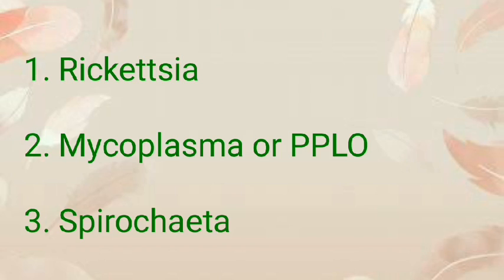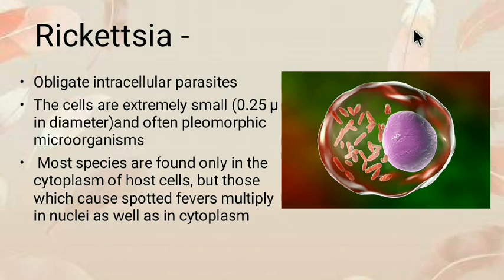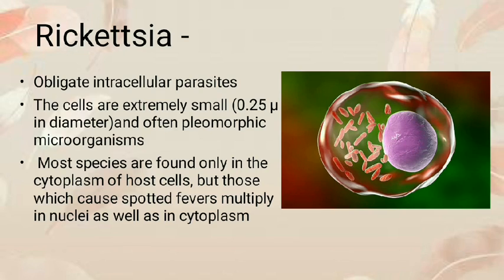Rickettsia are bacteria which are obligate intracellular parasites. They are considered a separate group of bacteria because they have the common feature of being spread by arthropod vectors like lice, fleas, mites, and ticks. The cells are extremely small, rod-shaped, coccoid, and often pleomorphic microorganisms which have typical bacterial cell walls, no flagella, are gram-negative, and multiply via binary fission only inside host cells.